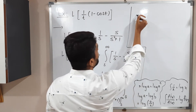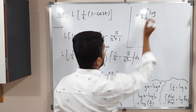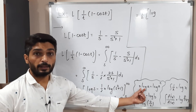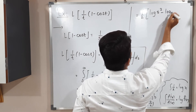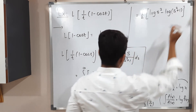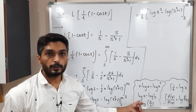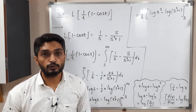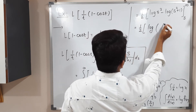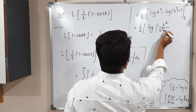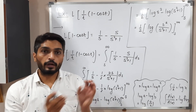Using these properties, this becomes one half times log S squared minus log S squared plus one, which by the subtraction property gives one half log of S squared upon S squared plus one, with limits S to infinity.